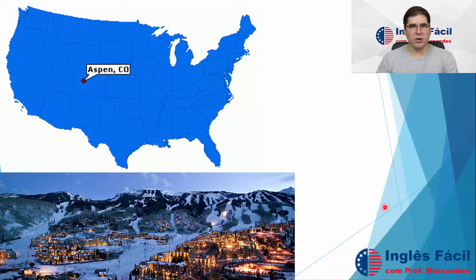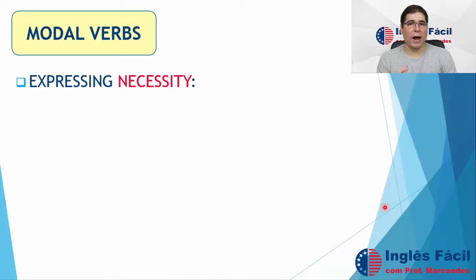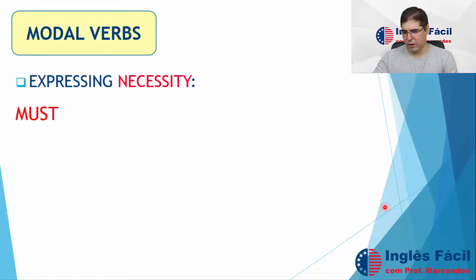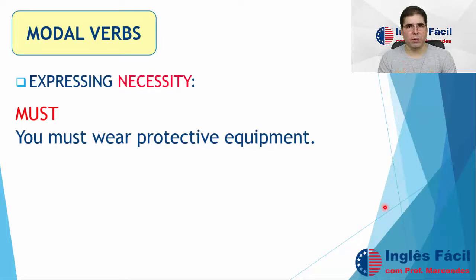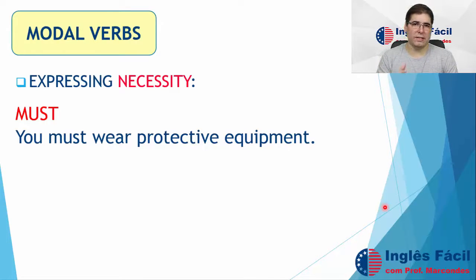Now let's look at the modal verbs we have today. The first group are the ones that express necessity — something that you have to do, things that are necessary. The first one is 'must.' For example: you must wear protective equipment. This is a necessity. Probably it is forbidden to go skiing or to practice a sport without protective gear or protective equipment. So this is something that you must do — it's necessary to wear protective equipment.